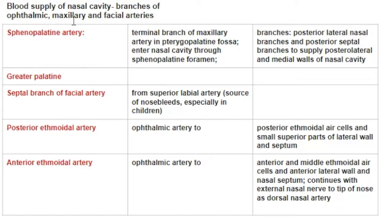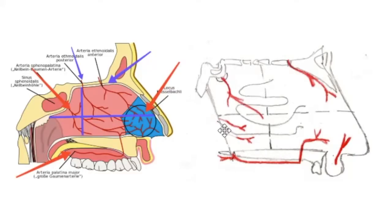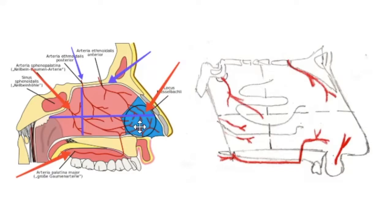After the sphenopalatine artery we come to the greater palatine artery, which is also a branch of the maxillary artery. As it emerges onto the roof of the oral cavity, it enters the floor of the nasal cavity via the incisive canal, supplying the anterior regions of the medial wall and the adjacent floor of the nasal cavity. This is the second artery contributing to the anastomosis in the antero-inferior part.